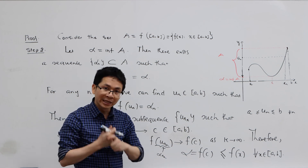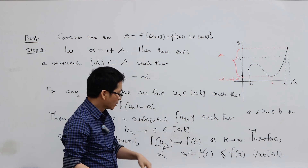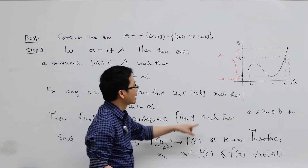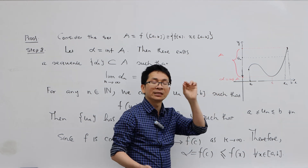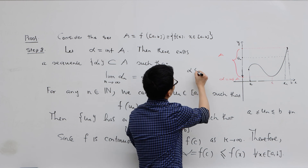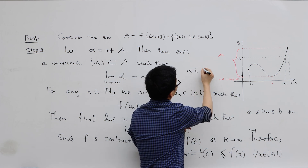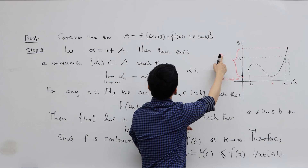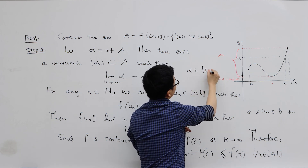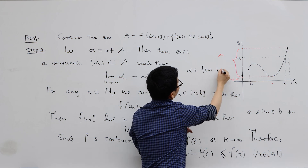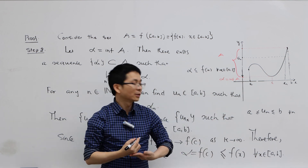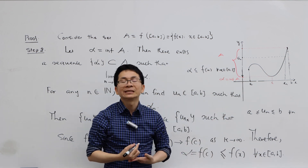And we have completed the proof. I want to emphasize a very important fact: α here is the infimum of A, so it is a lower bound of the set A. Therefore α is less than or equal to every element of the set A, meaning α is less than or equal to f of x for all x in the closed interval from a to b. The proof is complete.